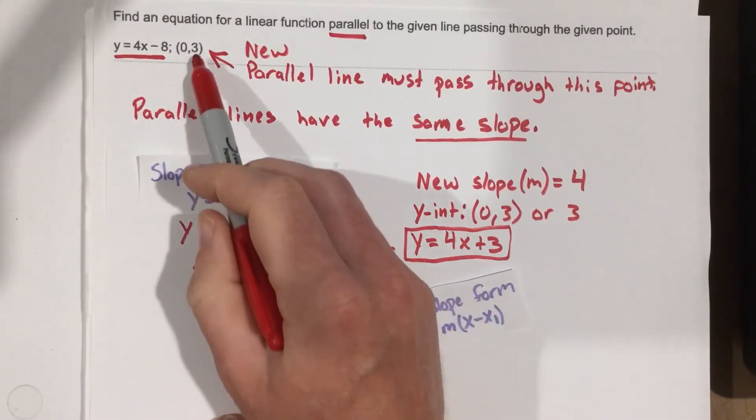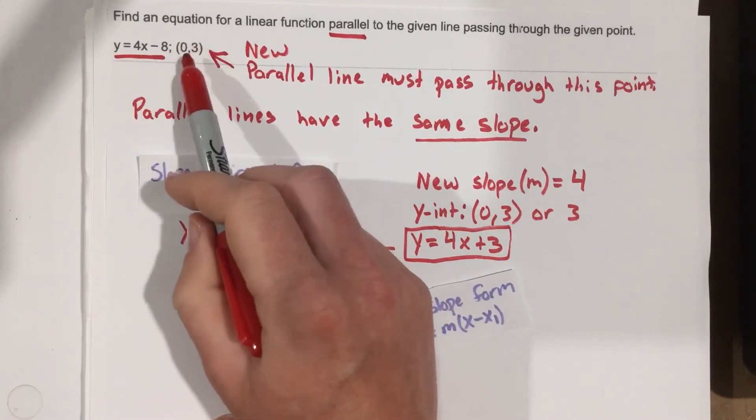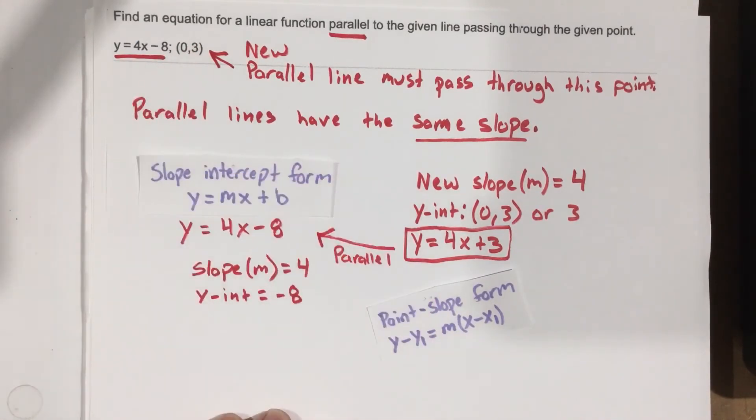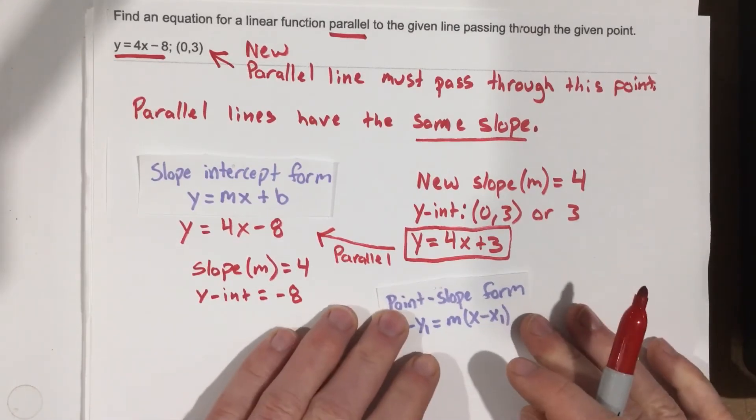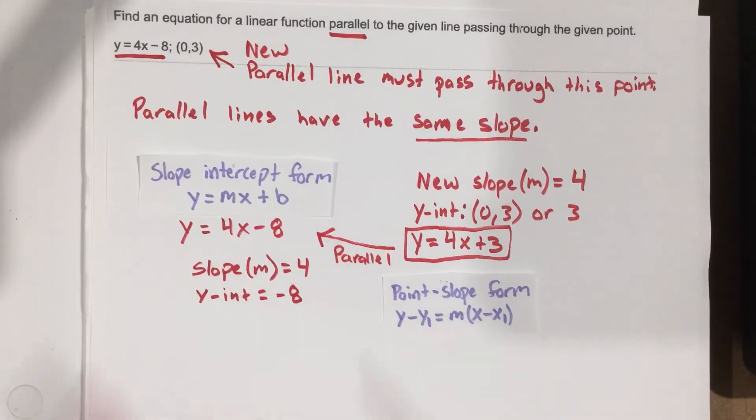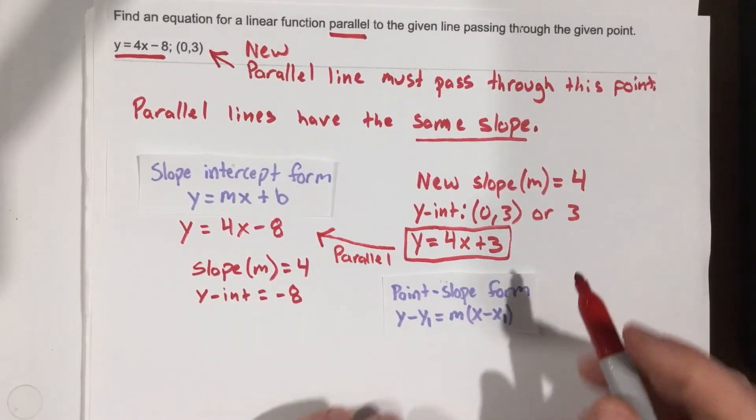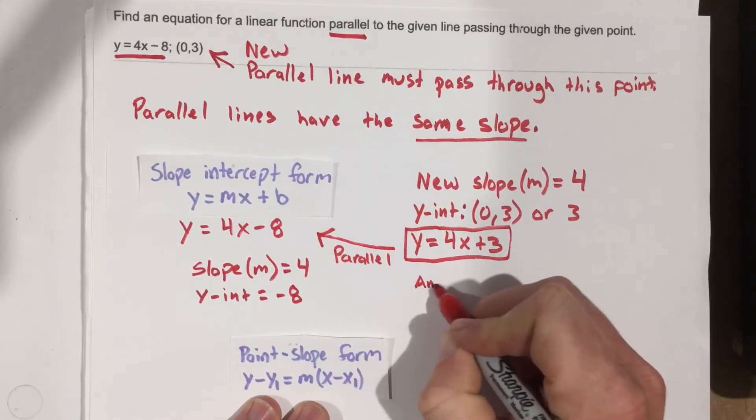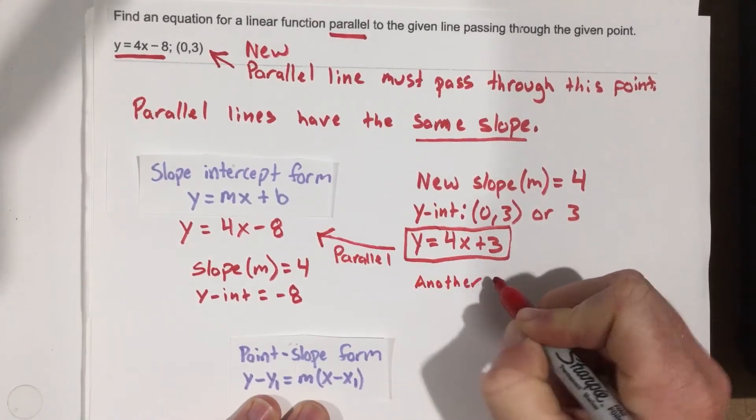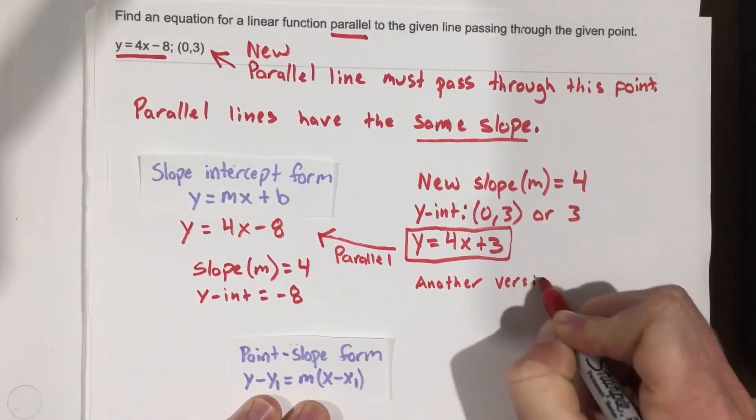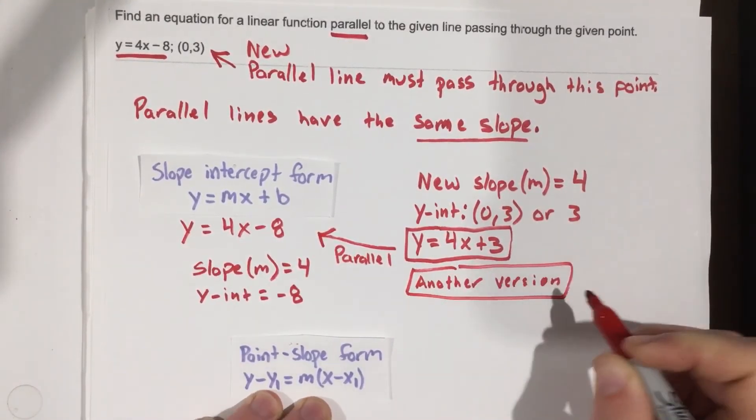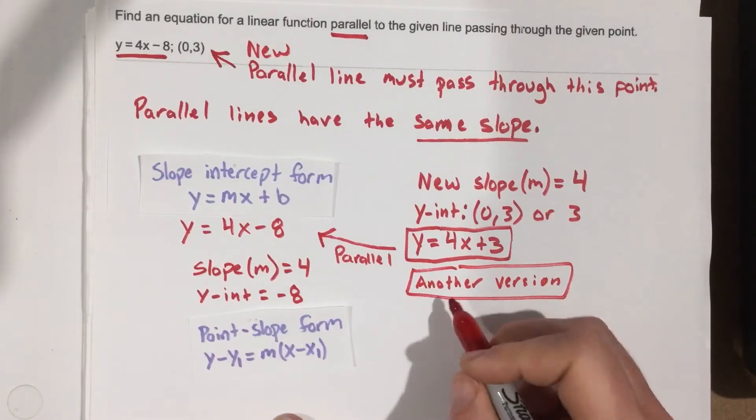But what if they give you a problem that doesn't have this point that is the y-intercept? Well, what we would do is we would use point-slope form and then just rewrite it into slope-intercept form. So let's show this version. So I'm just going to say another version.